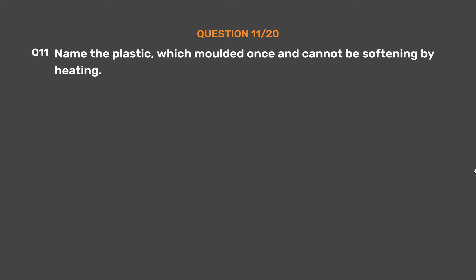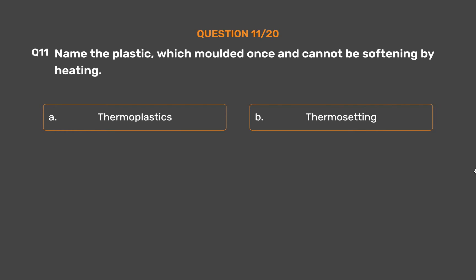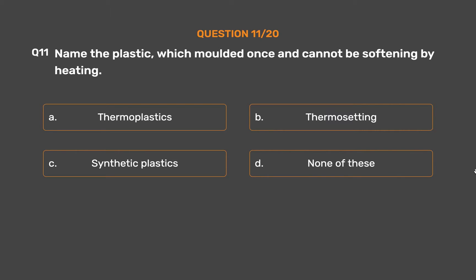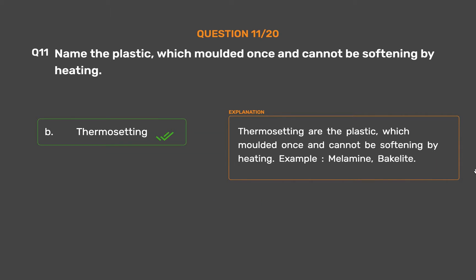Question Number 11. Name the plastic which, once molded, cannot be softened by heating. Option A: Thermoplastics. Option B: Thermosetting. Option C: Synthetic plastics. Option D: None of these. The correct answer is Option B: Thermosetting. Thermosetting plastics are those which, once molded, cannot be softened by heating. Examples: Melamine, Bakelite.